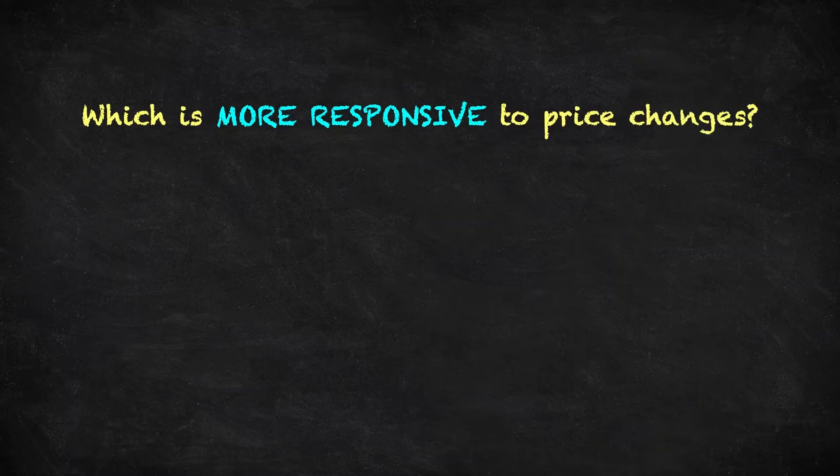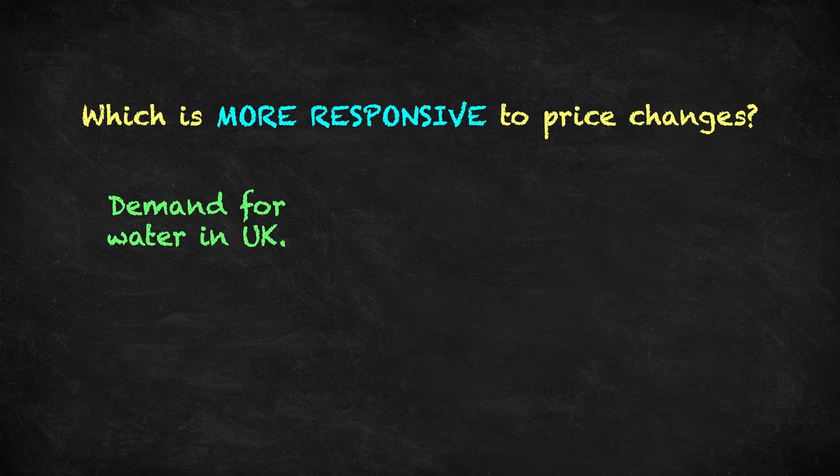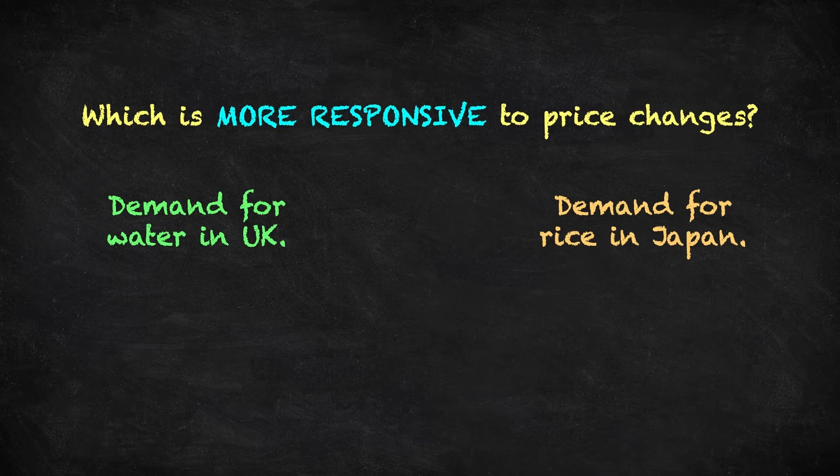Here's a question to think about. Which of these is more responsive to price changes? Demand for water in the UK, or demand for rice in Japan? We're looking for a way to measure responsiveness, so that we can compare the responsiveness of demands for different goods in different countries.